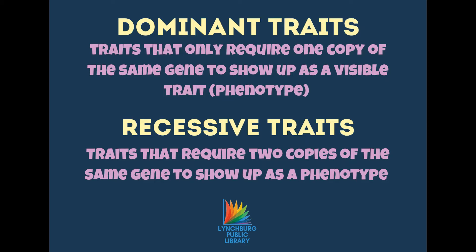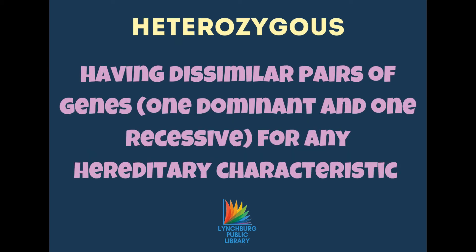There are two types of traits: dominant traits and recessive traits. Dominant traits are traits that only require one copy of the same gene to show up as a phenotype, or a visible trait. Recessive traits are traits that require two copies of the same gene to show up as a visible trait, or phenotype. When an organism is heterozygous for a specific trait, that means it has a dissimilar pair of genes for that particular hereditary characteristic.